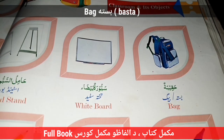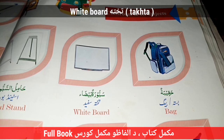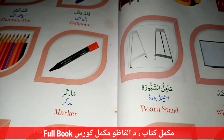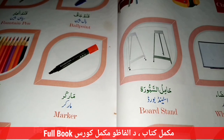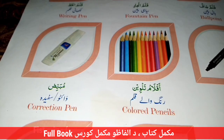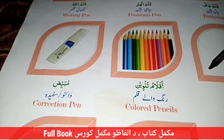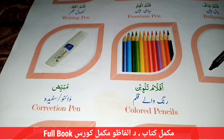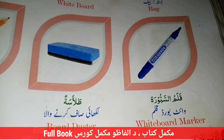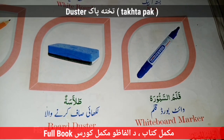Bag — Basta. Whiteboard — Takhta. Board Stand — The Board Stand. Marker. Colored Pencils — Darangunu. Pencil. Correction Pen. White Board Marker. Board Duster — Takhta Saf.